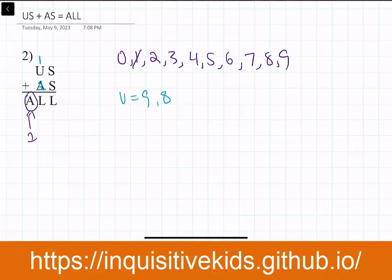Now we can list out the corresponding values of S and L. If U equals nine, then L would equal one. And if U equals eight, then L would equal zero. Because we know that one is already taken by A, then it means L can't be one. Which means U also can't be nine.